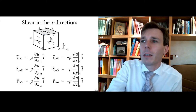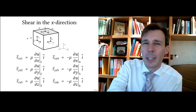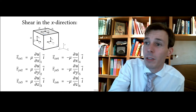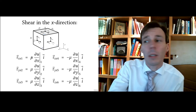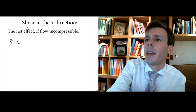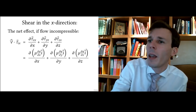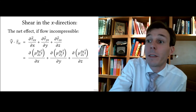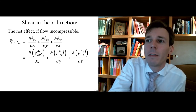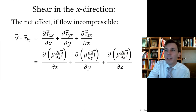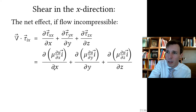For each of the six faces of the cube in incompressible flow, we can express the shear using local velocity gradients and viscosity. To get the net effect — the divergence of the shear tensor — we sum components in X, Y, and Z. The shear vector in X involves the change in X of mu times the change in X of velocity, and similarly for Y and Z.